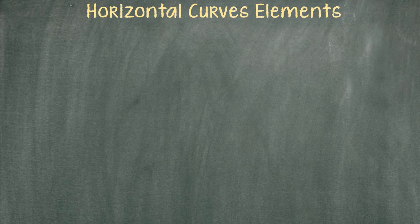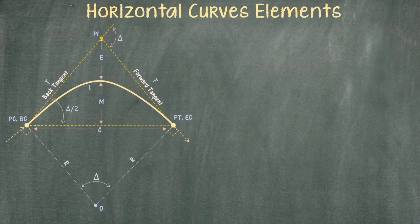In this occasion, I'm going to go over the main terms and equations for all the main elements on a horizontal curve. The following diagram shows all the main elements on a horizontal curve. I'm going to explain each one of those.